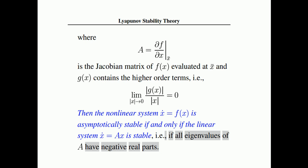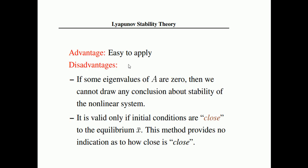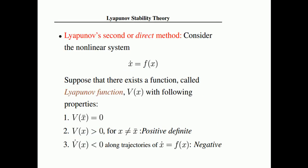The advantage of this method is that it is easy to apply. However, it has disadvantages: if some eigenvalues of A are zero, we cannot draw any conclusion about the stability of the nonlinear system. Another drawback is that it is valid only when the initial conditions are close to the equilibrium point x-bar, and this method provides no indication of how close is 'close.'